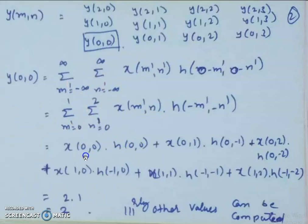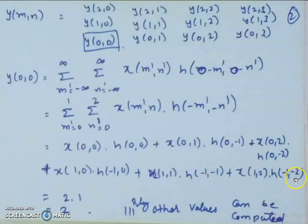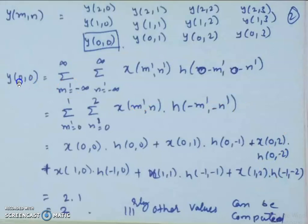Expanding this, we get: x[0,0]·h[0,0] + x[0,1]·h[0,-1] + x[0,2]·h[0,-2] + x[1,0]·h[-1,0] + x[1,1]·h[-1,-1] + x[1,2]·h[-1,-2]. You can verify the index property: m' + (m - m') = m and n' + (n - n') = n, confirming the indices are consistent.